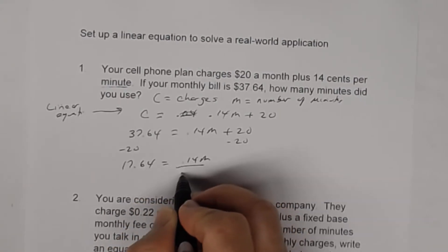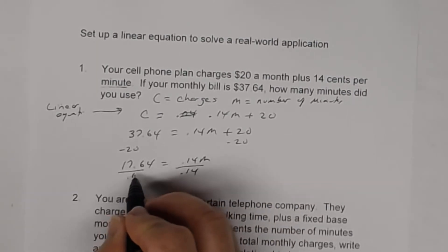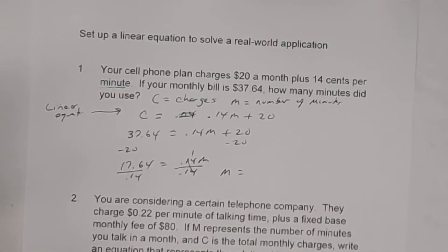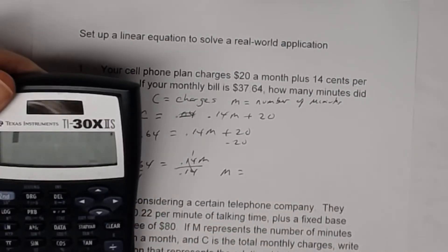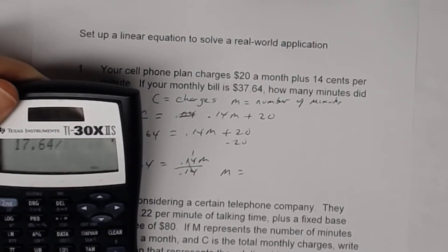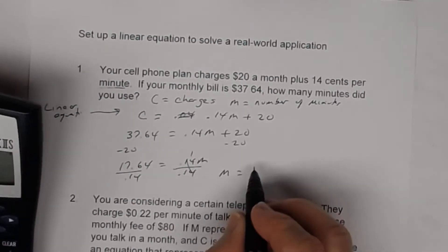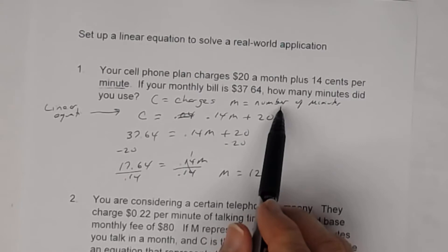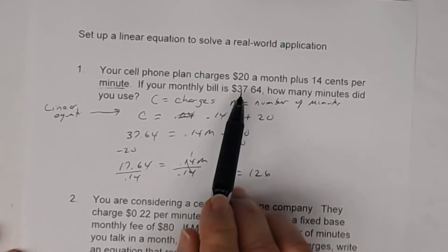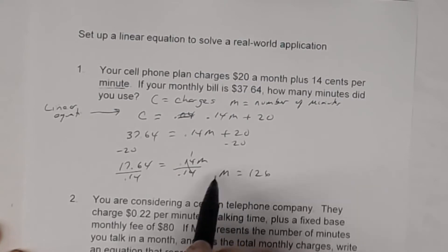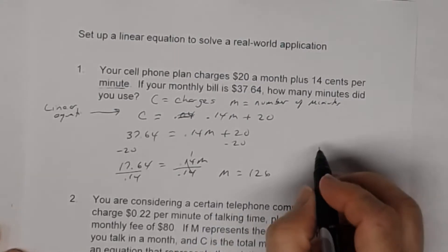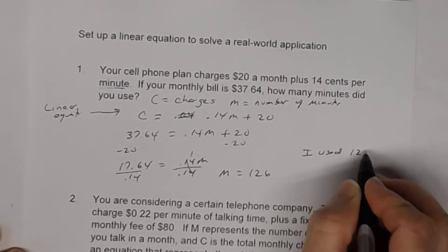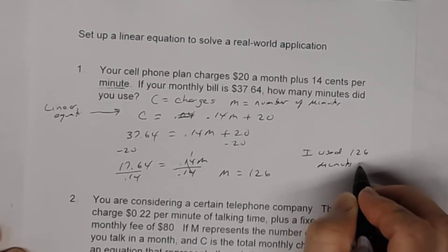To get M by itself, we're going to divide both sides by 0.14. Using a calculator, 17.64 divided by 0.14 equals 126. So what that means is — remember what we let M equal — M was the number of minutes. So if my monthly bill is $37.64, that means I used 126 minutes. I used 126 minutes for the month.